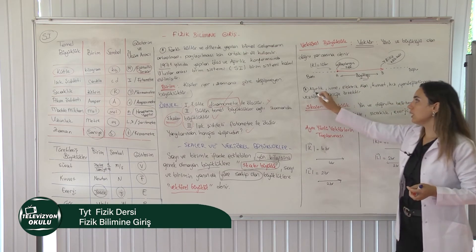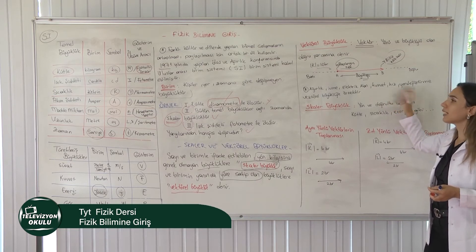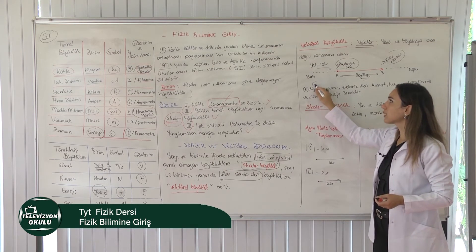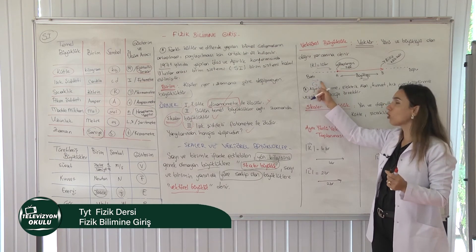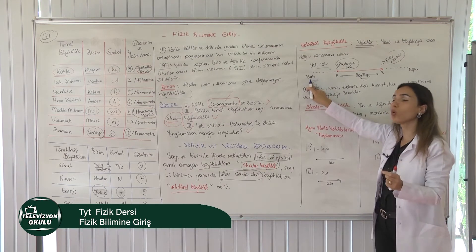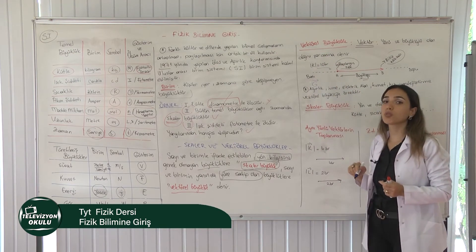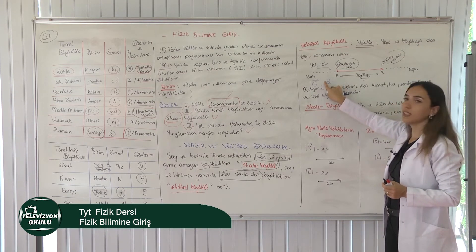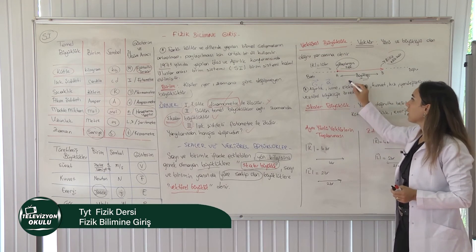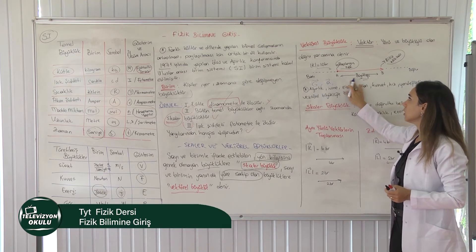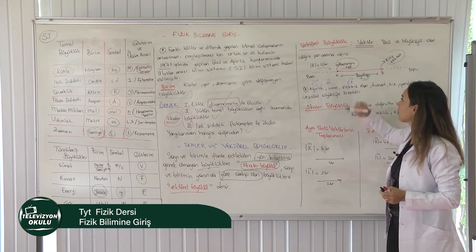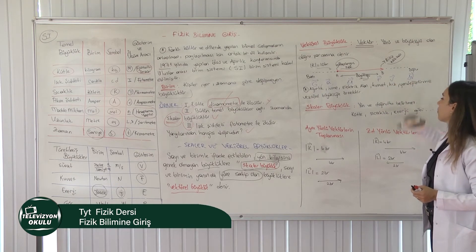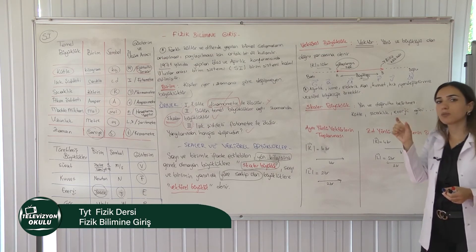Ağırlık, ivme, elektrik alan, kuvvet, hız, yer değiştirme vektörel büyüklüklerdir. Fizikte vektörel büyüklüklerin başına ok işareti koyarız: ağırlığı büyük G ile gösterirken üzerine ok koyarız. İvmenin de başında ok işareti vardır çünkü yön ifade eder. Elektrik alan, kuvvet, hız, yer değiştirme için de yönü belirtmek için ok işareti kullanırız. Skaler büyüklüklerde ise yön ve doğrultu belirtmeyiz; mesela kütle, sıcaklık ya da enerjinin başına ok koymuyoruz.